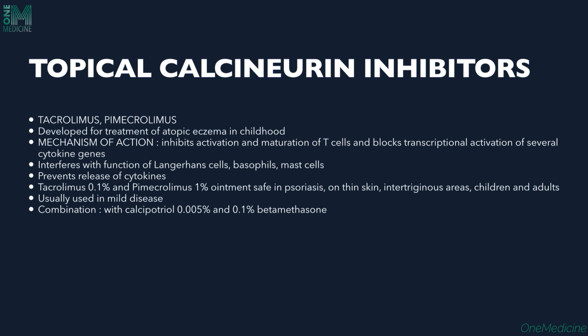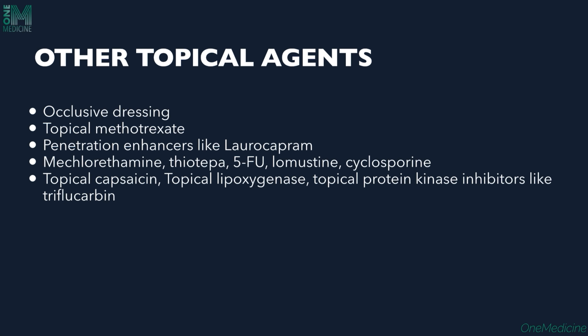Topical calcineurin inhibitors include tacrolimus and pimecrolimus. They act by inhibiting the activation and maturation of T-cells, interfering with the function of Langerhans cells, basophils, and mast cells, and preventing the release of cytokines. Tacrolimus 0.1% and pimecrolimus 1% are available. Other topical therapies include occlusive dressing, topical methotrexate, penetration enhancers like laurocapram, mechlorethamine, thiotepa, 5-fluorouracil, lomustine, cyclosporin, topical capsaicin, topical lipoxygenase inhibitors, and topical protein kinase inhibitors like trifluoromethyl ketone.